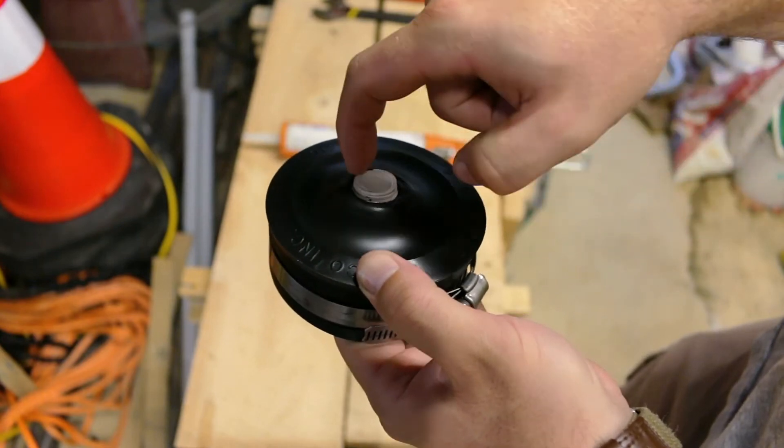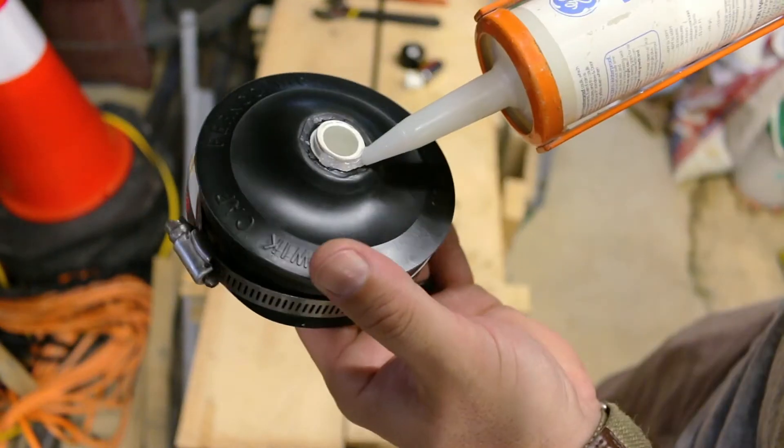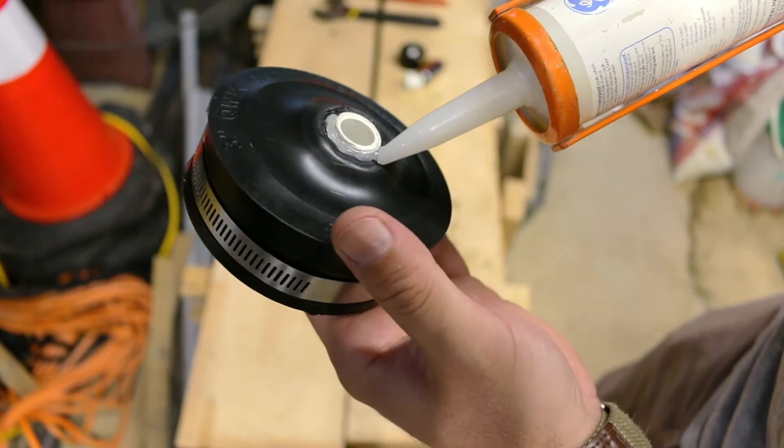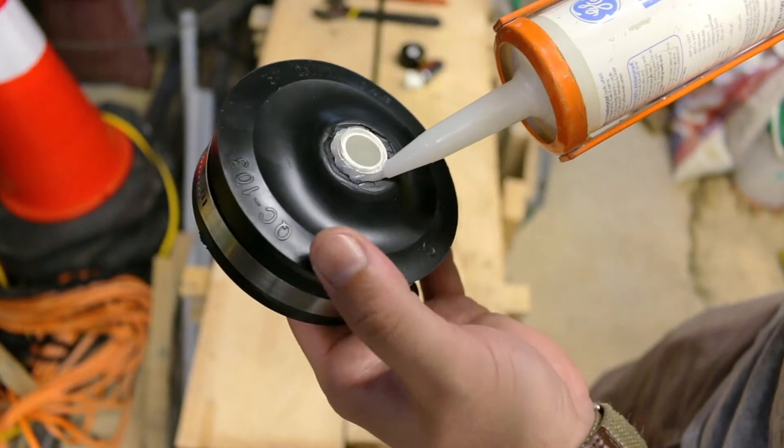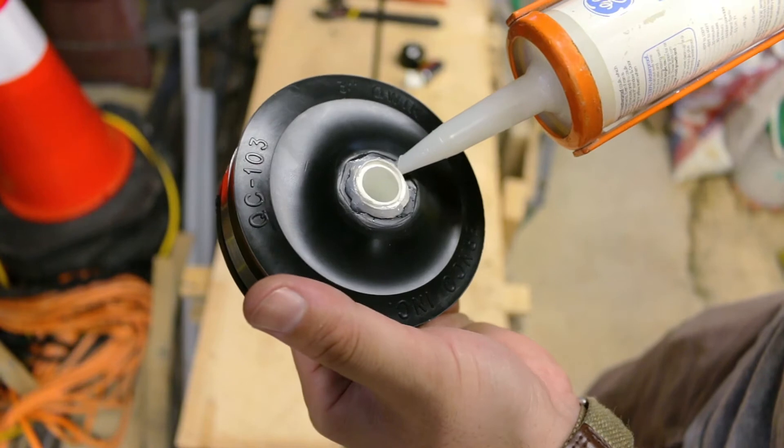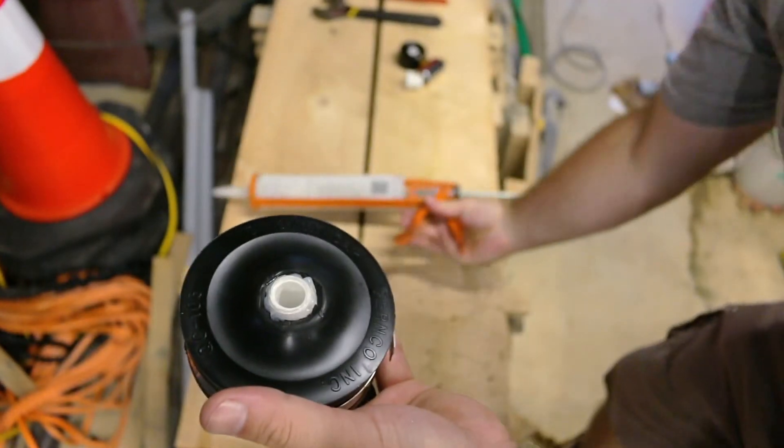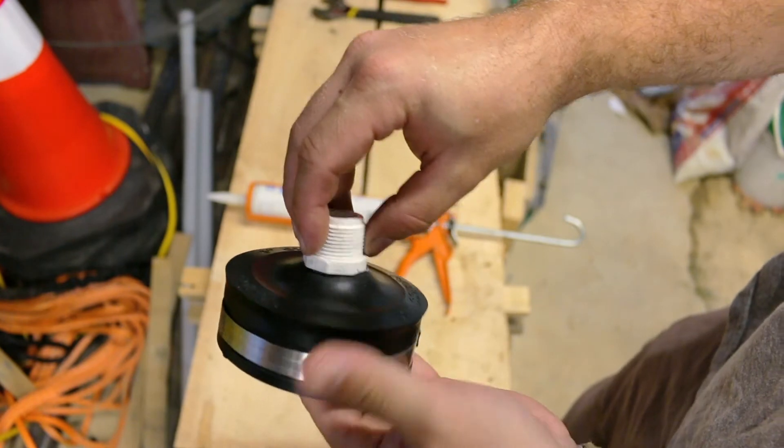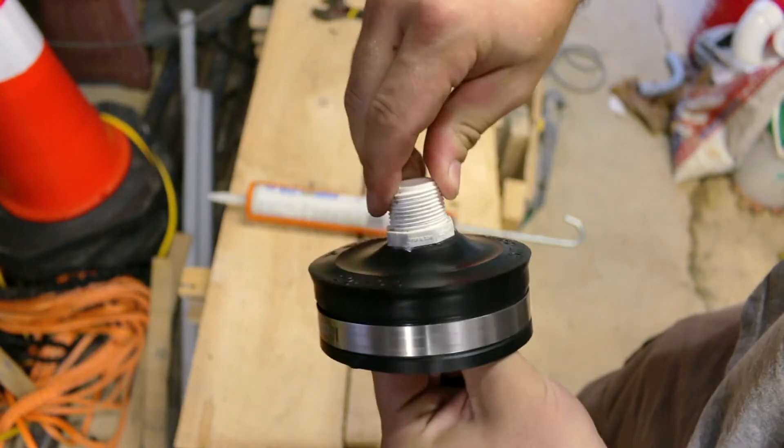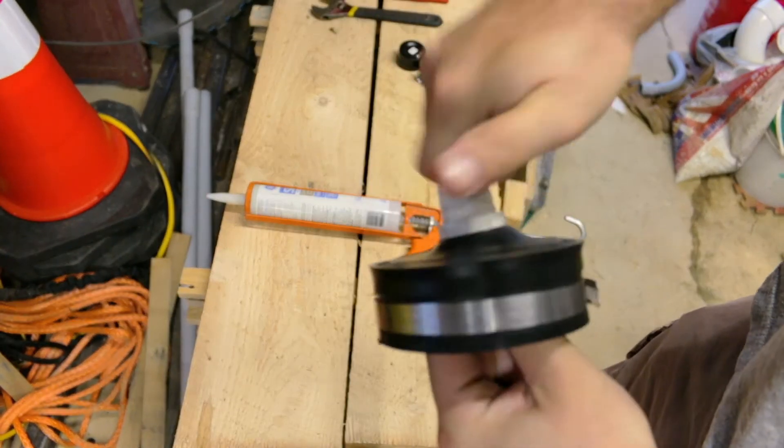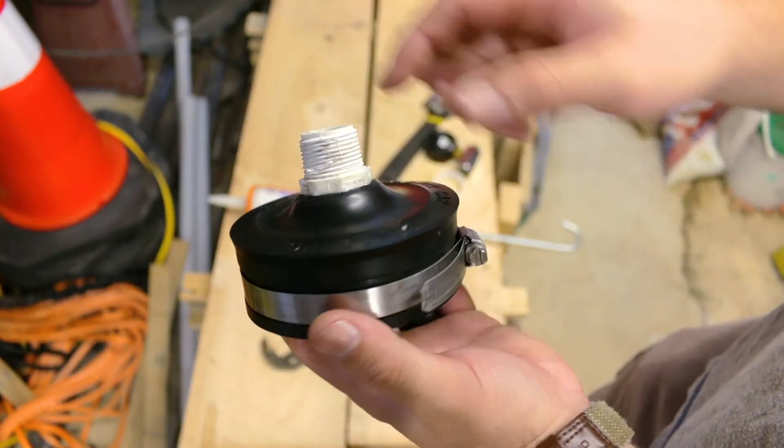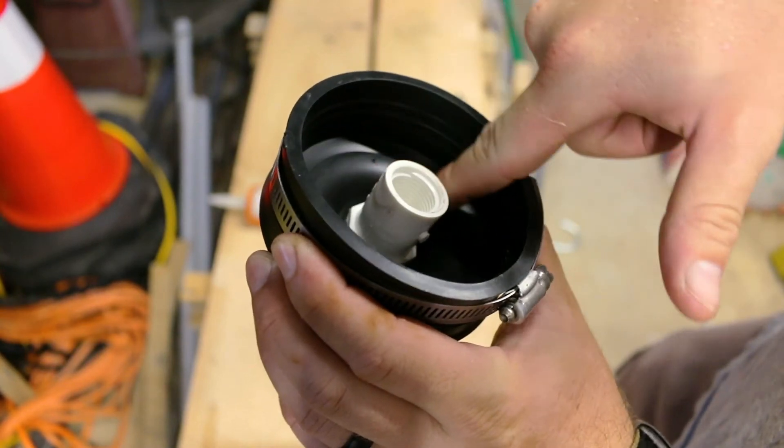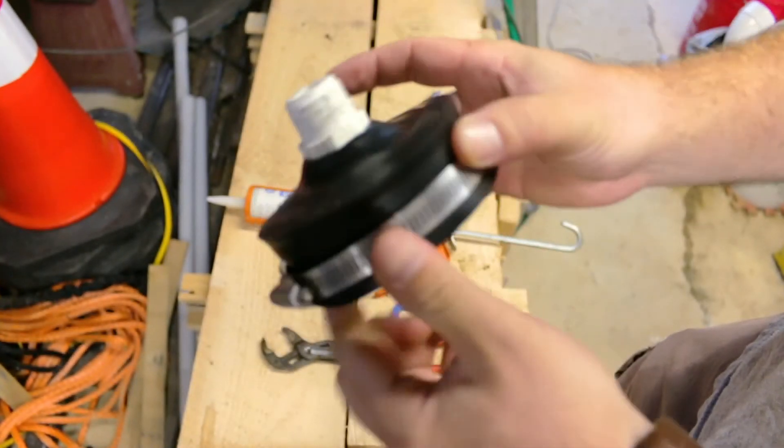We're going to take another bead of caulk and put it right around here. There's not enough room to put teflon tape so that's why we're using silicone here. We're going to take our bushing, screw this on. Now that we have this all tightened down, you can go ahead and run a bead of caulk around here on the inside and the outside. It's just going to help seal it up a little bit.